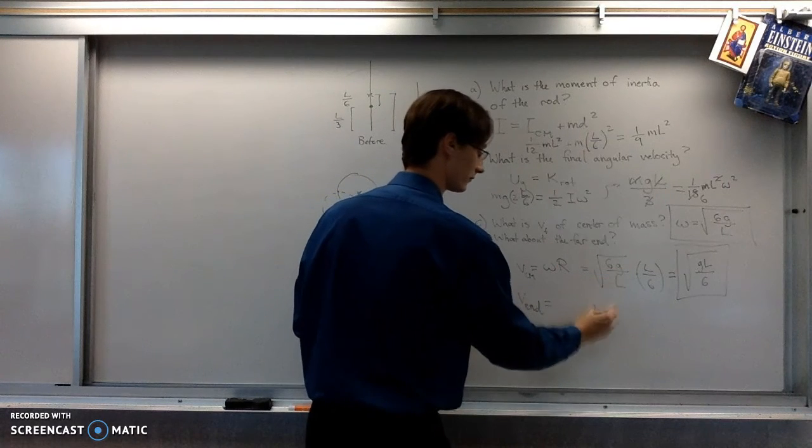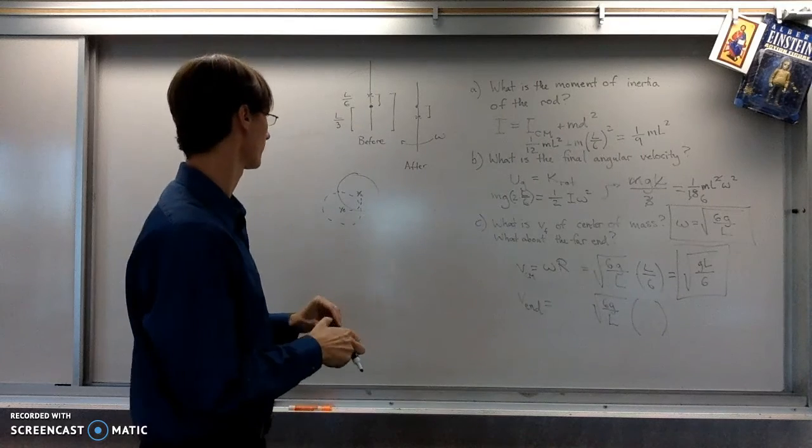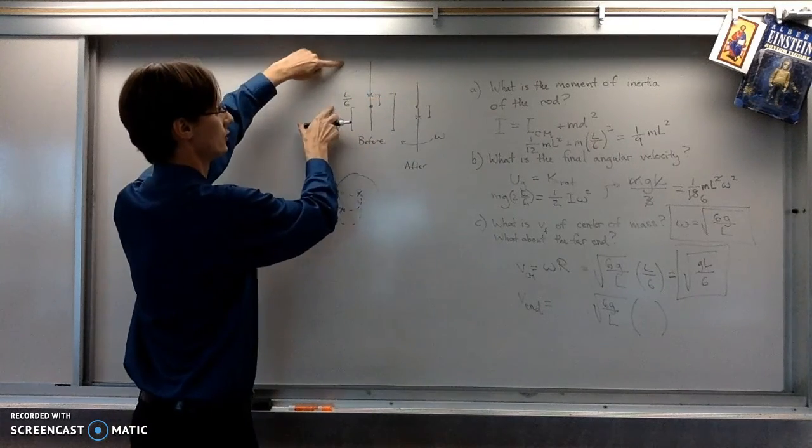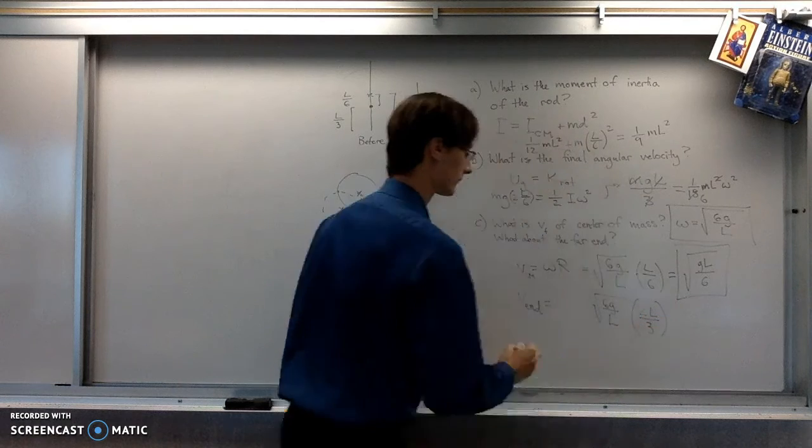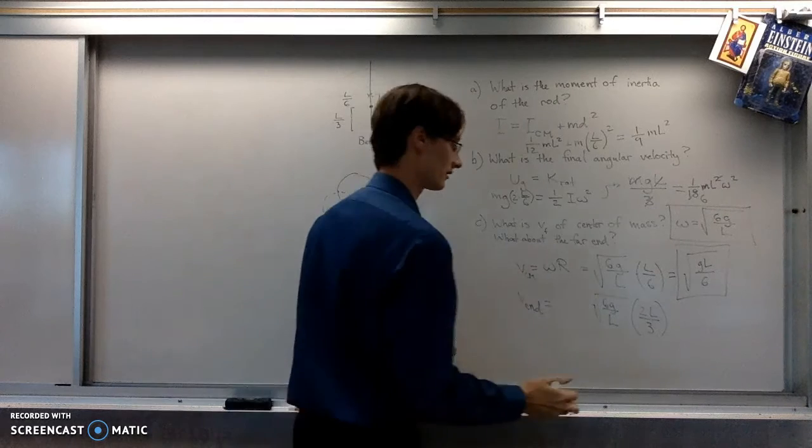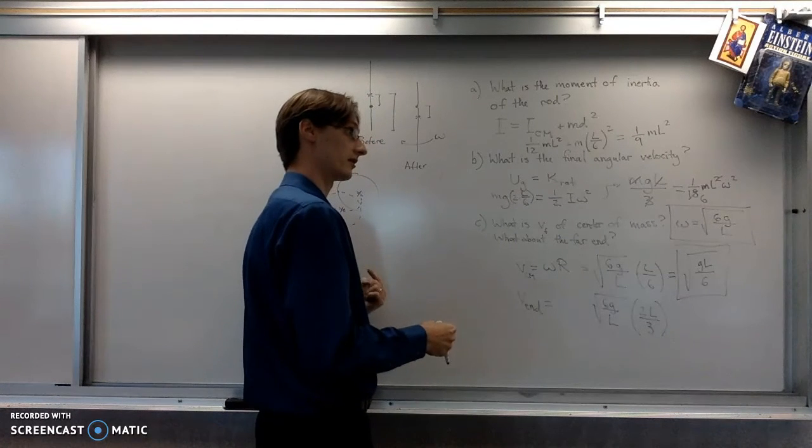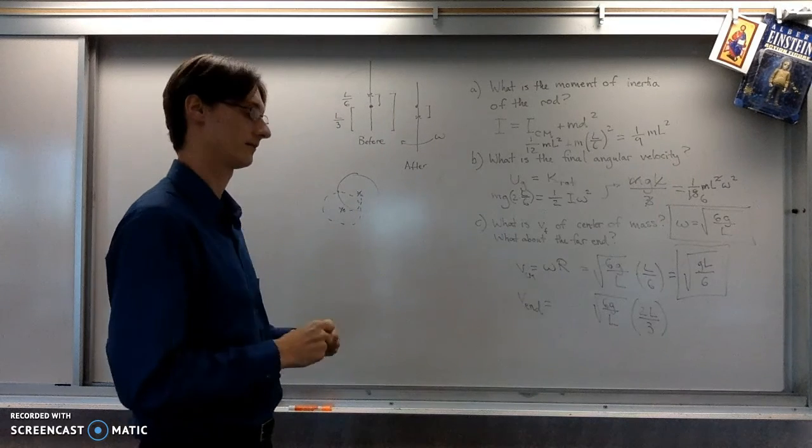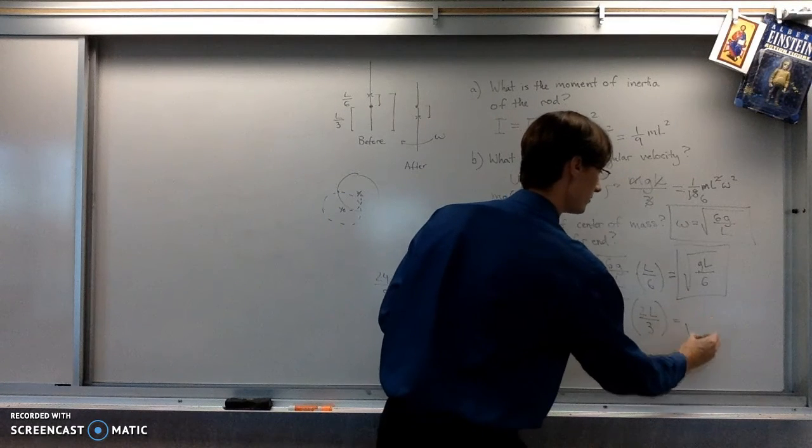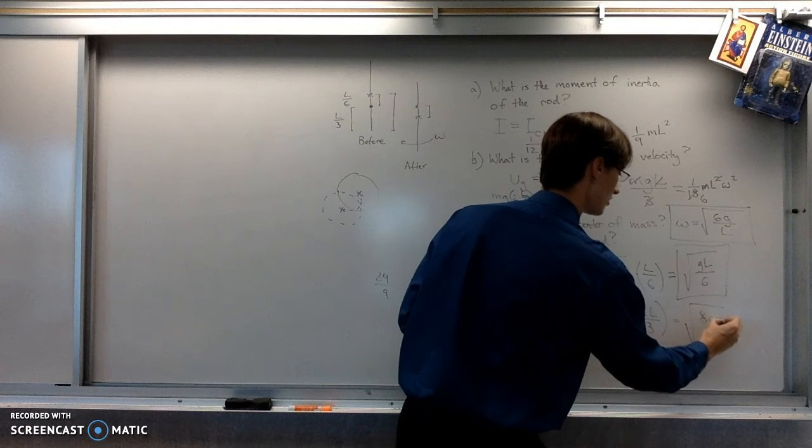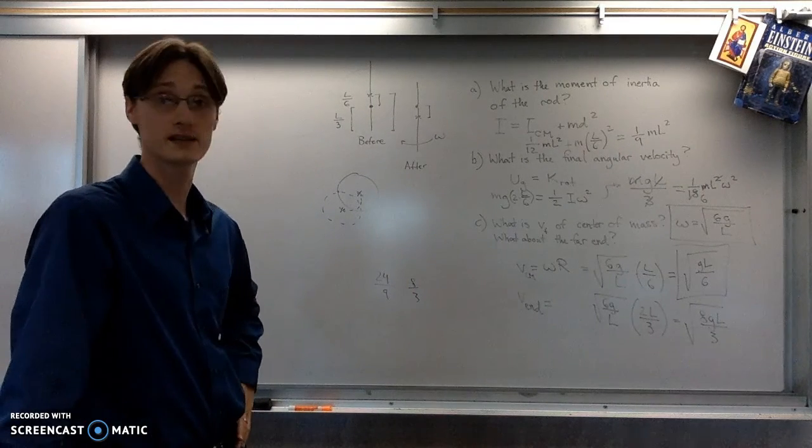The speed of the end of the rod is going to be, again, we'll just take that angular velocity, root 6G over L, and we'll multiply it by a different distance. The far end of the rod is 2 thirds L away from the pivot. So we'll have a slight bit more math here, simplifying that out. See, that's 4 and 24 over 9, which is 6. No, hold on. We'll get root 8 GL over 3 for our speed of the end of the rod.